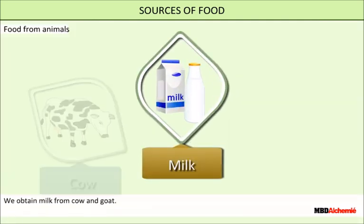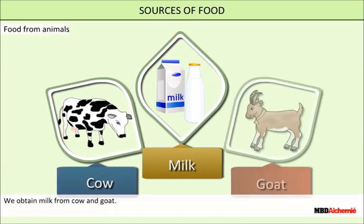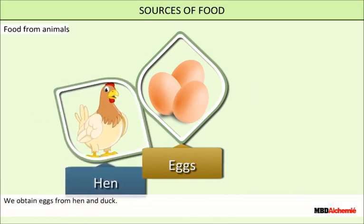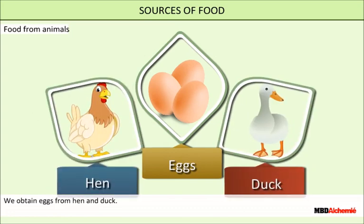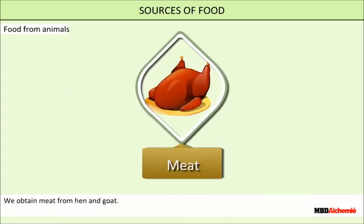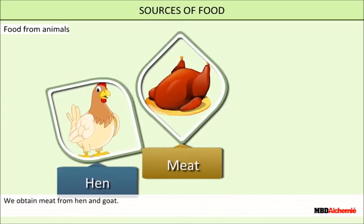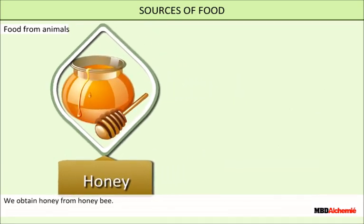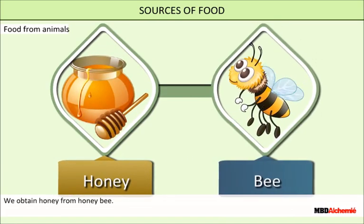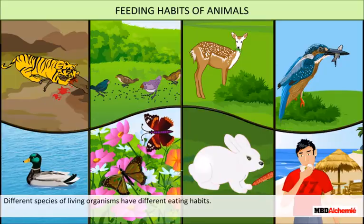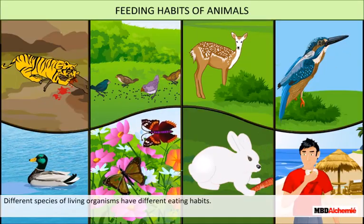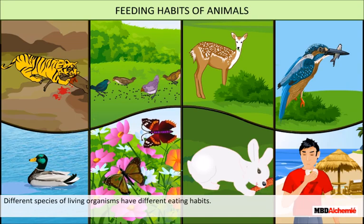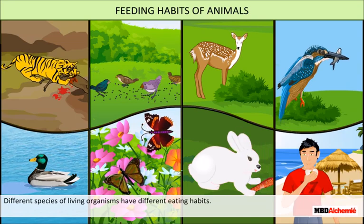We obtain milk from cow and goat. We obtain eggs from hen and duck. We obtain meat from hen and goat. We obtain honey from the honey bee.